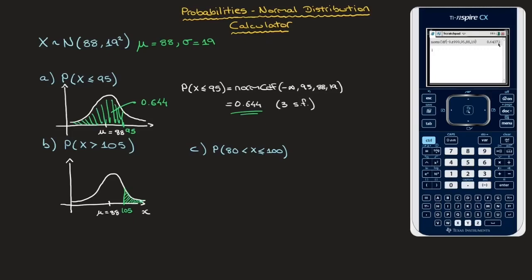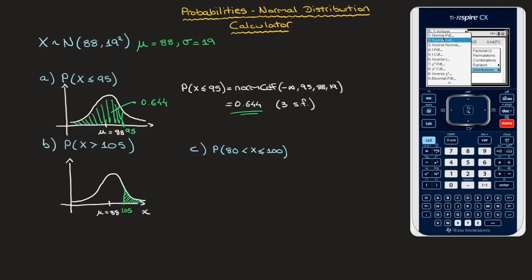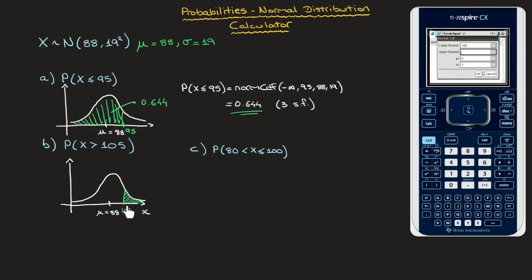Now to calculate this area, we go back to the calculator and use the normal CDF function again. I click on menu, followed by the fifth option probability, followed by the fifth option distributions, followed by the second option normal CDF. I'm asked for the lower bound — in this case, we're starting the area at 105, so that is the lower bound. I enter 105. For the upper bound, this area goes on forever, so the upper bound is positive infinity. Rather than entering positive infinity, I'll enter a very large positive number: 99,999.